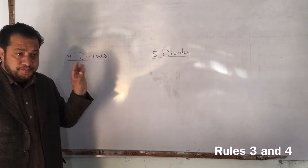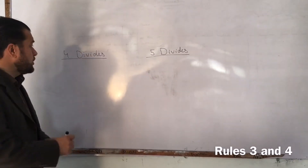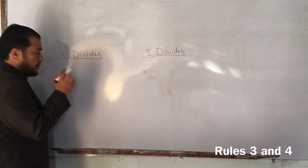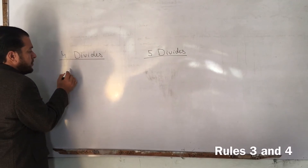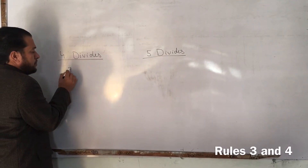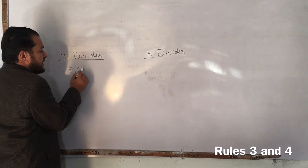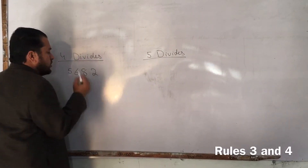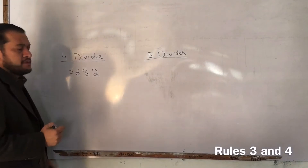There is a rule. The numbers are 5, 6, 8, 2 — these are the same. It is the same rule.